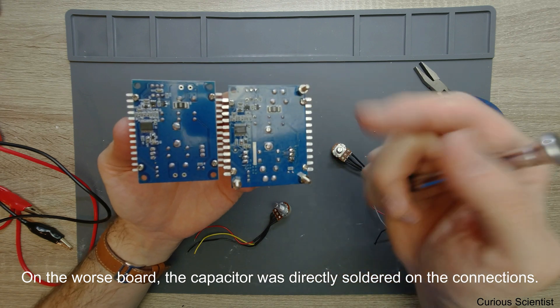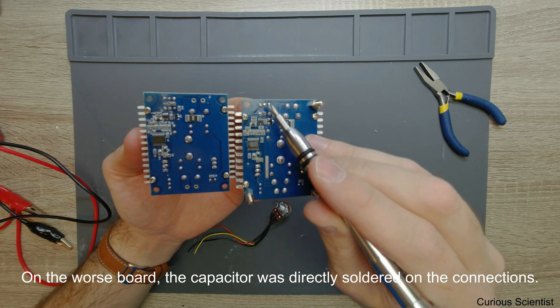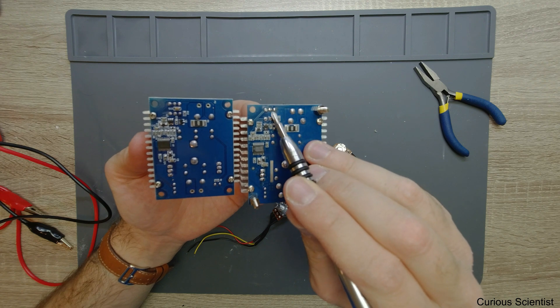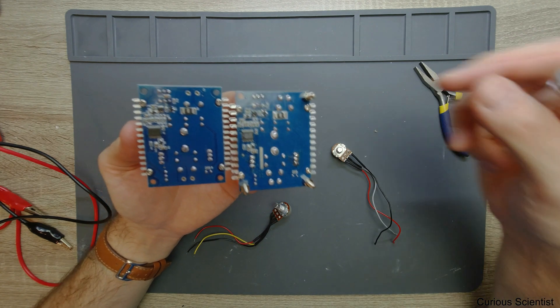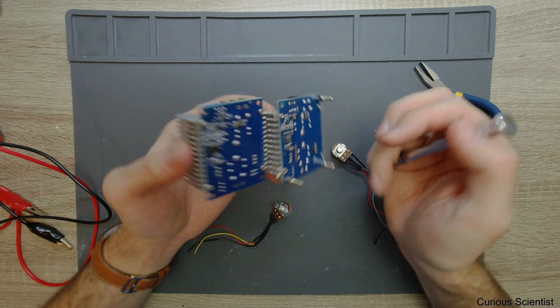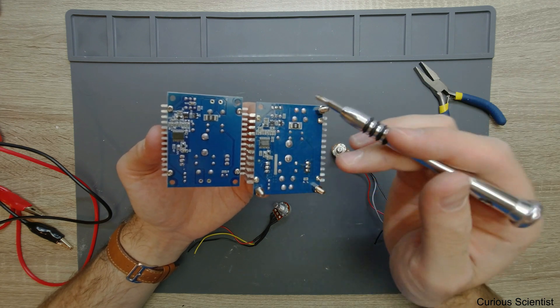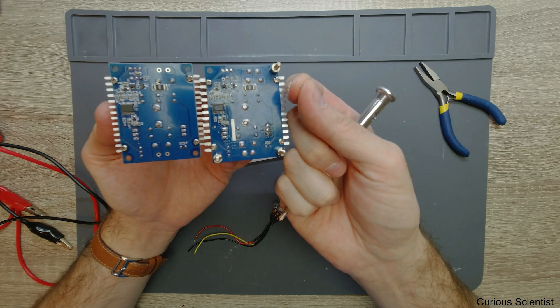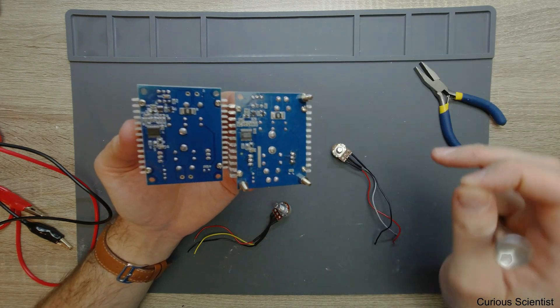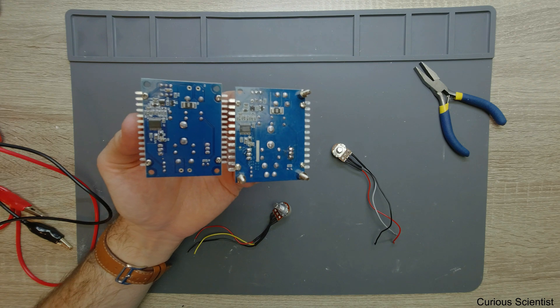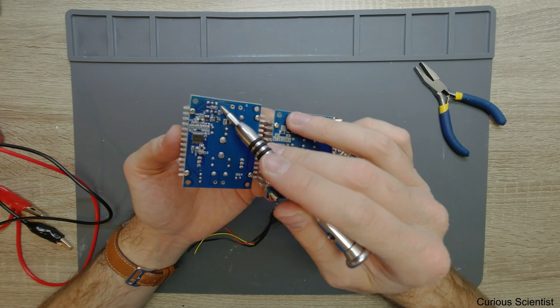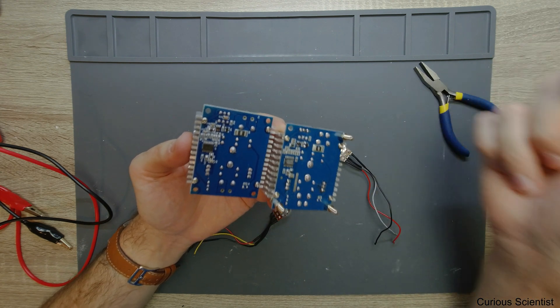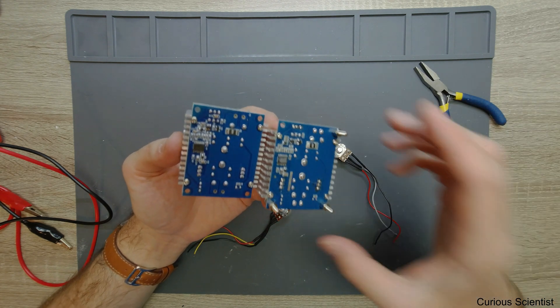I actually have it here on the tip of my finger. This was actually soldered on one of these connections. The trimmers, these blue guys, were soldered in and then this SMD capacitor was directly soldered on these blobs here. That's not a nice solution, but this is very nice because it has its own dedicated spot.